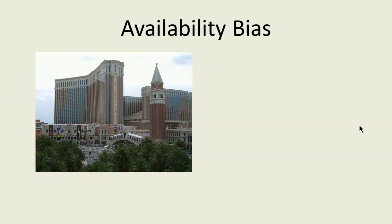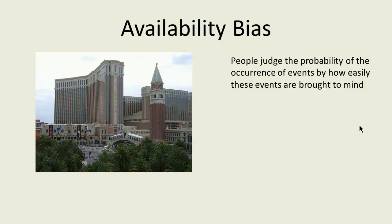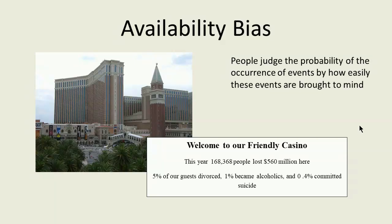According to the availability heuristic, people judge the probability of the occurrence of events by how easily these events are brought to mind. Based on what we know about the availability heuristic, if the government really wanted to reduce gambling, it should erect huge billboards listing personal bankruptcies and showing broken families in front of casinos. As with gamblers, the availability heuristic affects how project managers evaluate events, products, supplies, and even people.